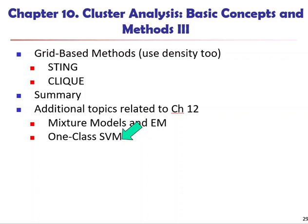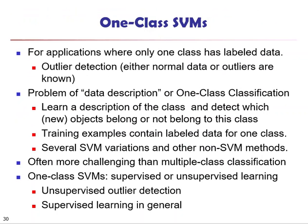Another method mentioned in Chapter 12 that often causes confusion is one-class classification. I'm going to use one-class support vector machine as one example to demonstrate the use of one-class classification. When we think about classification, it's putting things into different classes, so it's hard for people to imagine at the beginning when you would have a situation where you have one class and want to classify things.